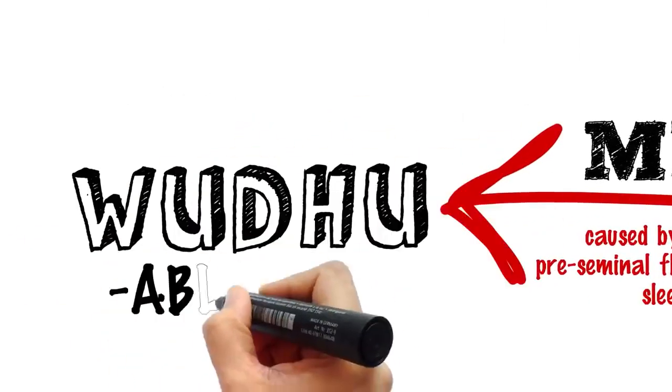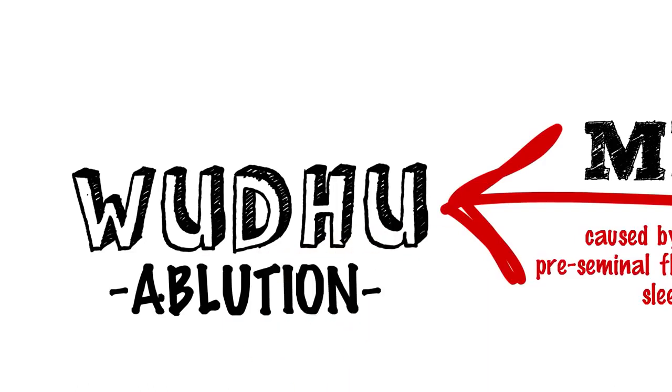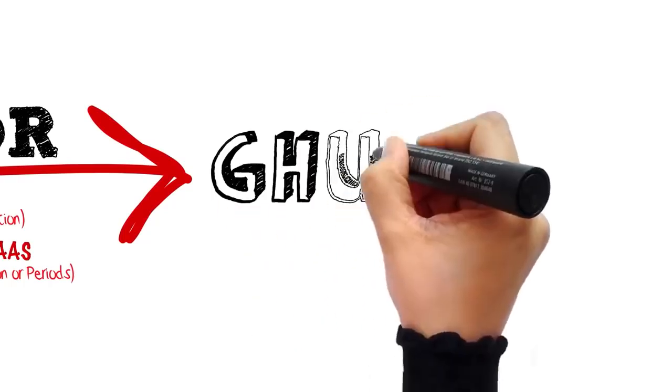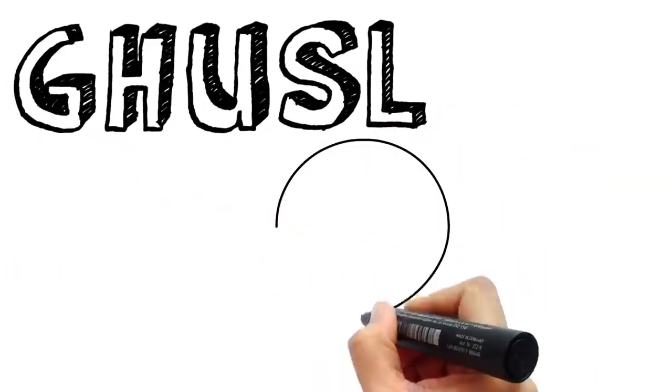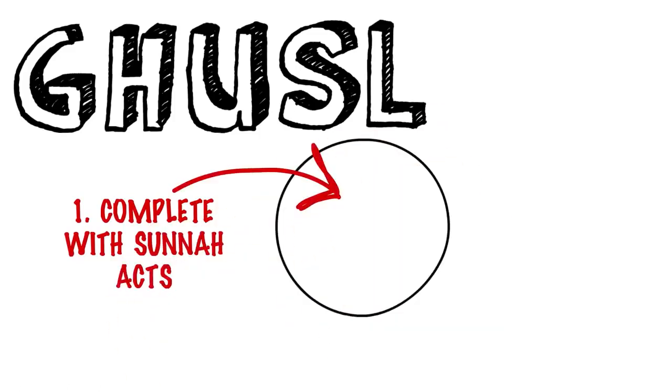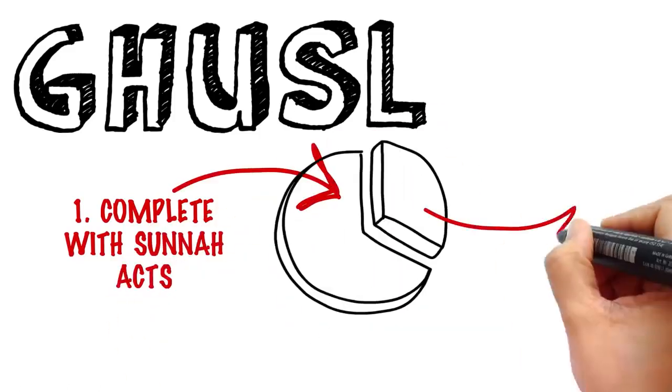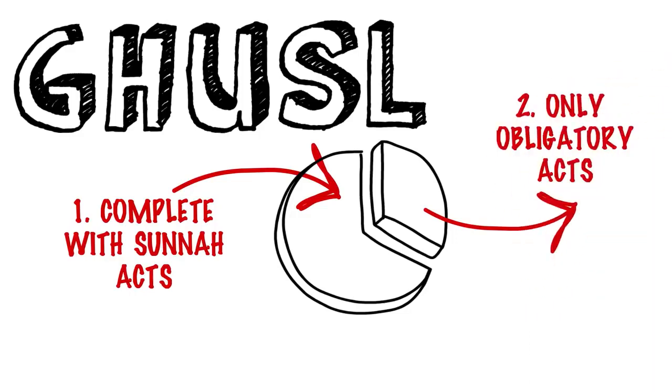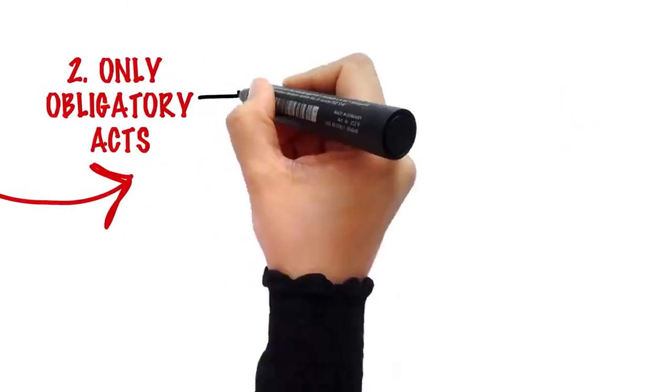Whereas in the case of major impurity, you need to take a ghusl. And ghusl can be taken in two ways: a complete ghusl with all the Sunnas of the Prophet, and a partial or a sufficient ghusl, which means only doing what is obligatory to free yourself from the ritual impurity.